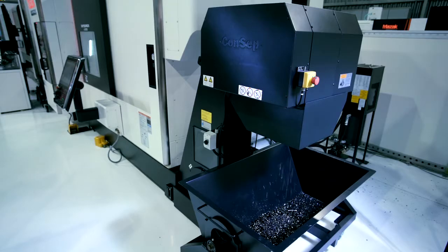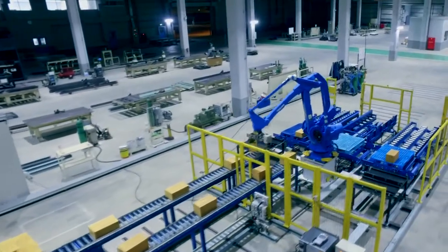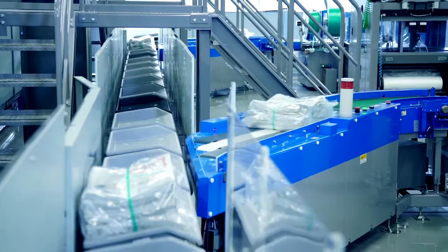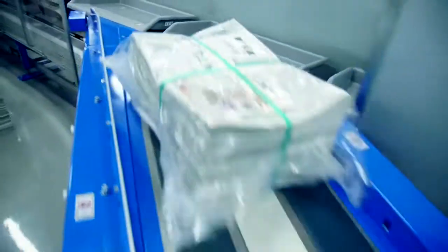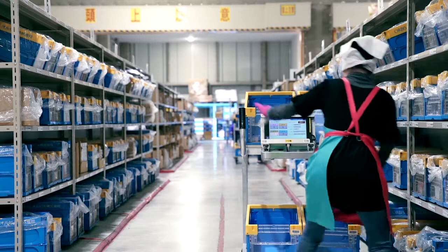Tsubaki goes beyond the bounds of chain to make actual conveying equipment, such as automatic sorting systems, picking systems and warehouse management systems.